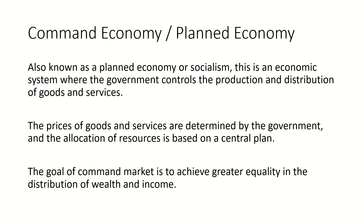Now let's talk about the second type of economic structure: command economy. This is also known as planned economy as well as socialism. This is an economic system where the government controls the production and distribution of goods and services — so this is the opposite to free market. The government is intervening in the economy and deciding the prices. The prices of goods and services are determined by the government and the allocation of resources is based on a central plan. The goal of the command economy is to achieve greater equality in the distribution of wealth and income.